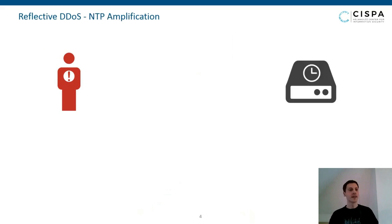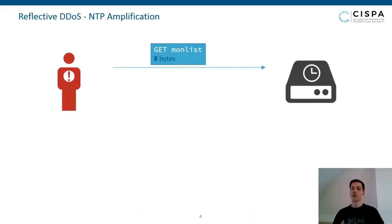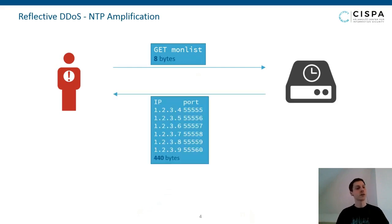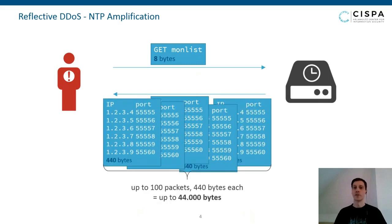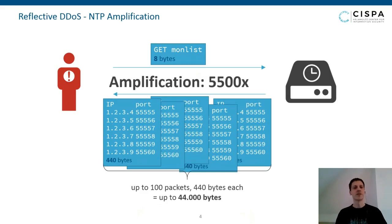An even worse example is NTP. NTP has a monitoring command called monlist, which is just an 8-byte packet. It asks the server for all IP addresses it has had contact with in the last 24 hours. The server will send back up to 100 packets. So for 8 bytes input, you get 44,000 bytes output — an amplification factor of over 5,000. This command was enabled by default in many old versions and, although disabled since, many servers still run the old config.